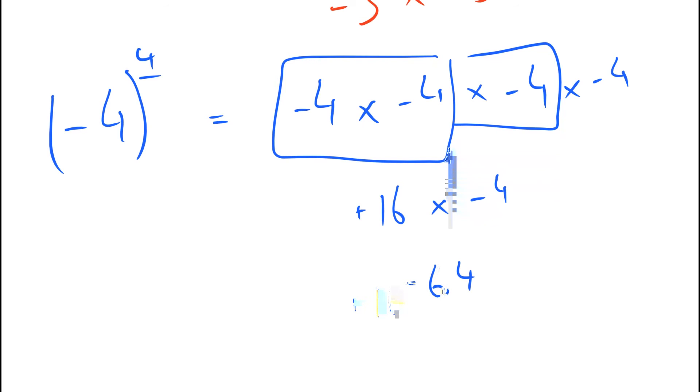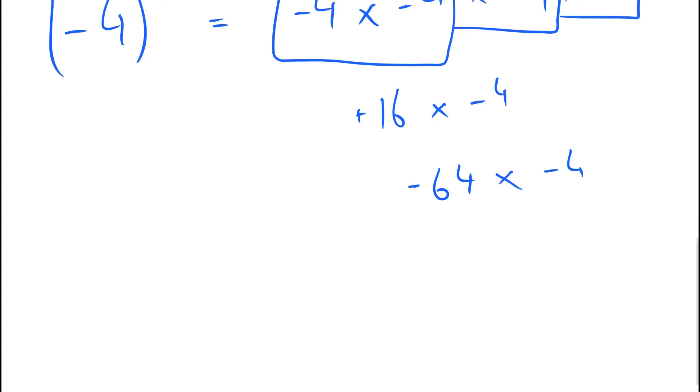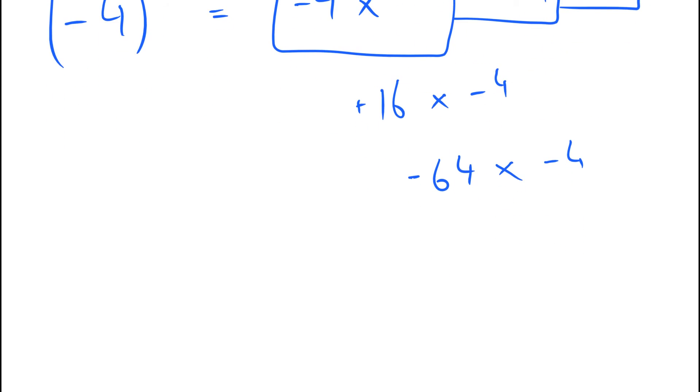Finally minus 64 times minus 4. Well let's use my box actually. So we're just to demonstrate how to do long multiplication. Okay so 6 times 4. You do the first digits is 24. Add on 10. 4 times 4 is 16.